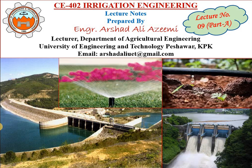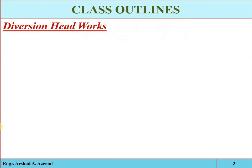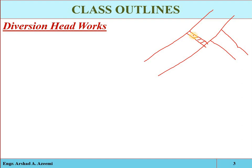Any hydraulic structure constructed at the head or offtaking point of an irrigation canal is called a headwork. Basically, it raises the water level in the river. If we have a natural river and at some point we have to take out an irrigation canal, then we construct a barrier so that the water level at the upstream side may be raised, to regulate water into the irrigation canal, to control the entry of silt, and to provide some short-term storage.